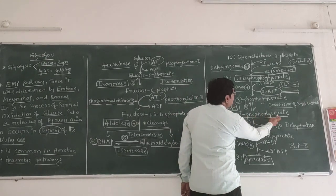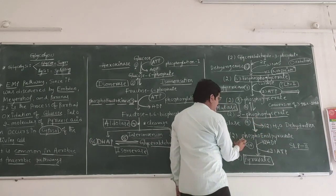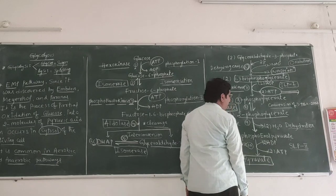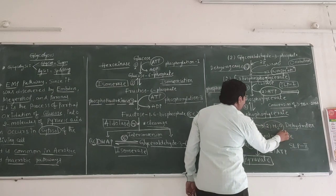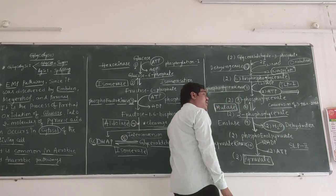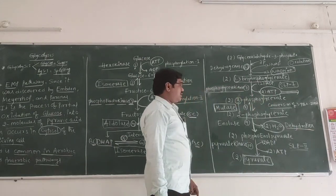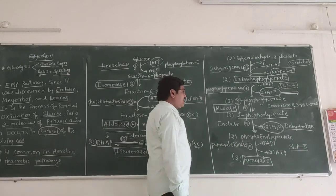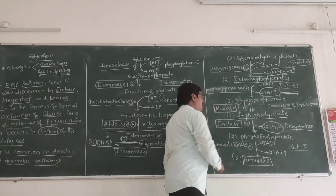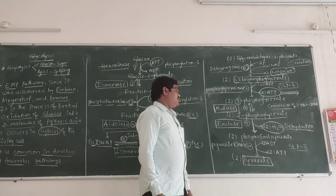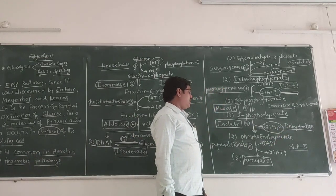The ninth reaction: 2-phosphoglycerate is converted into phosphoenolpyruvate. In this reaction, two water molecules are produced, which is why this reaction is called a dehydration reaction. This reaction is catalyzed by the enolase enzyme.